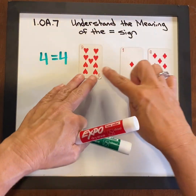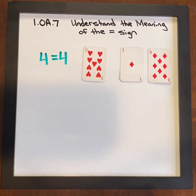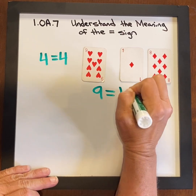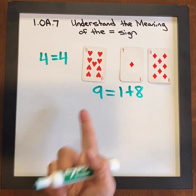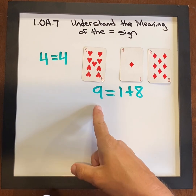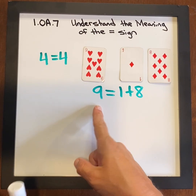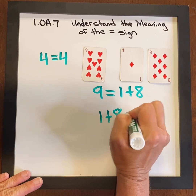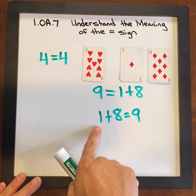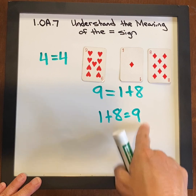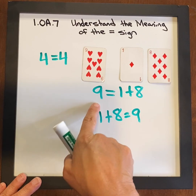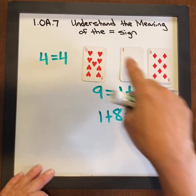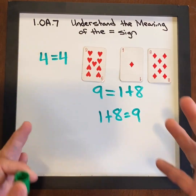What about 9 equals 1 plus 8? Let's write that: 9 equals 1 plus 8. Students may say that's not right because this is on the left side, because they're so used to seeing equations written 1 plus 8 equals 9, from left to right. This is often looked at as wrong in students' eyes, until they really have this understanding of what the equal sign means.